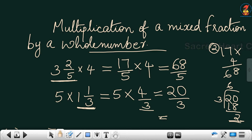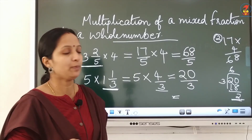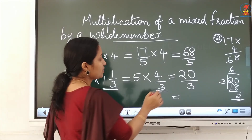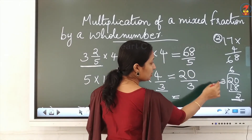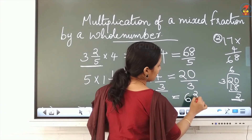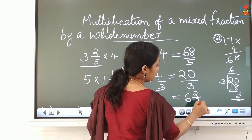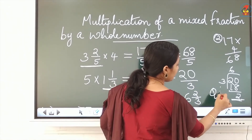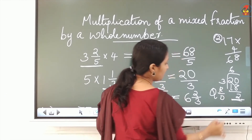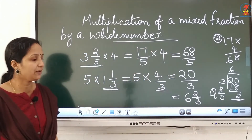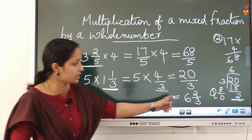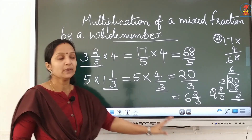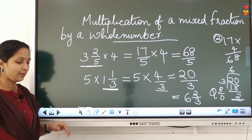We already learned the conversion of an improper fraction into a mixed fraction and a mixed fraction into an improper fraction. If the answer is an improper fraction, convert it into a mixed number. For example, 20 by 3: 3 sixes are 18, remainder 2. Using the formula — quotient remainder by divisor — the answer is 6 and 2 by 3.